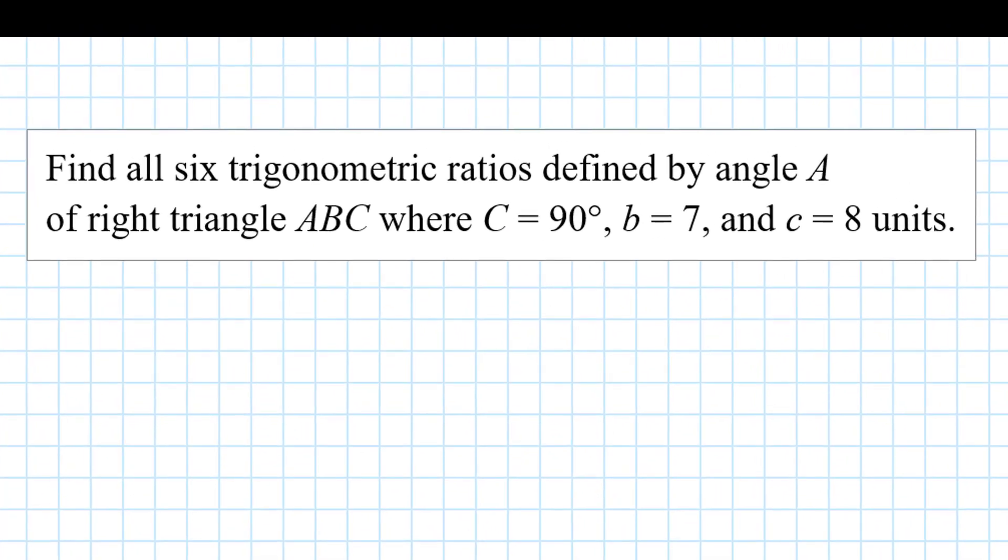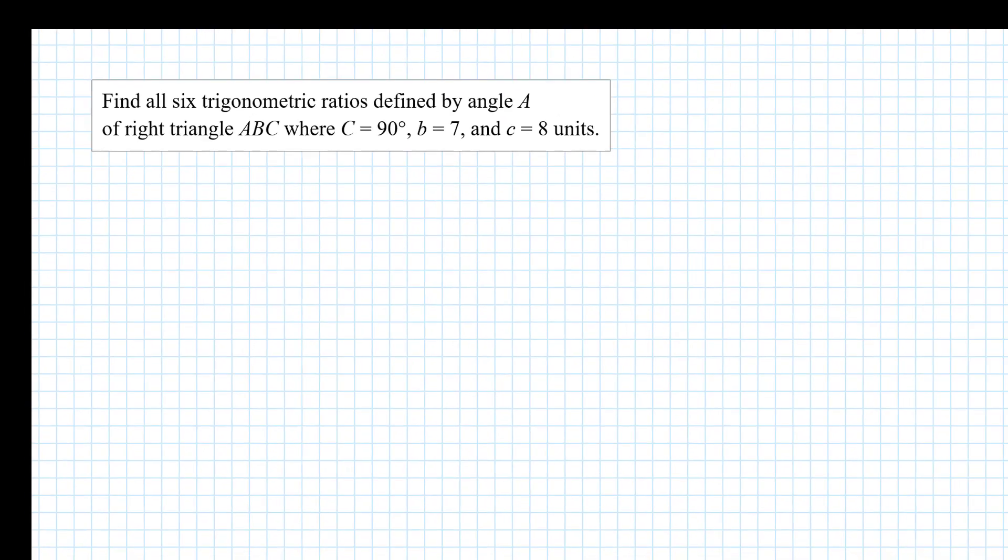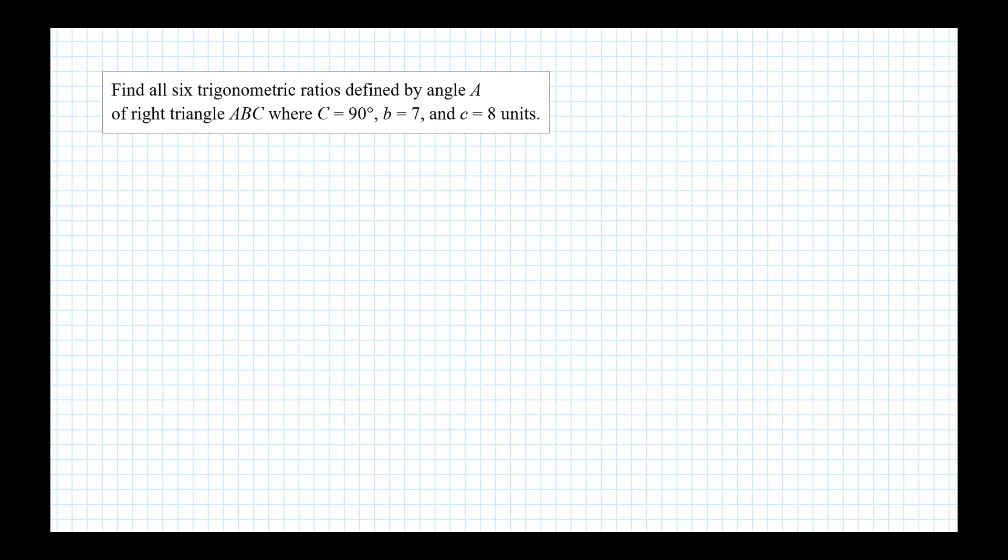Here we want to find all six trigonometric ratios defined by angle A of a right triangle ABC where C is 90 degrees, b is 7, and c is 8 units. Let's begin by drawing a little picture.